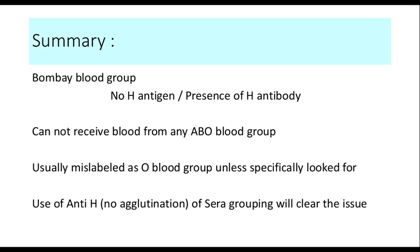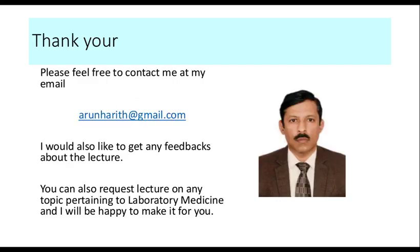To summarize: Bombay blood group is a group in which the H antigen is not present on the surface of the RBC, and because there is no H antigen, there will be no A or B antigen. These people have anti-A, anti-B, and anti-H antibodies in their sera. They cannot receive blood from any of the ABO blood groups because all of them express the H antigen. These people are usually mislabelled as O blood group unless specifically looked for, using the anti-H antisera or Sera grouping. Thank you very much — please feel free to contact me at arunharith@gmail.com.